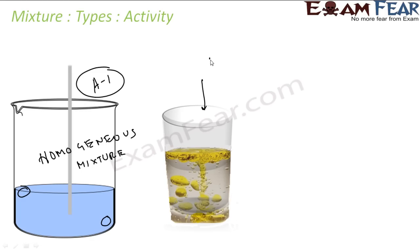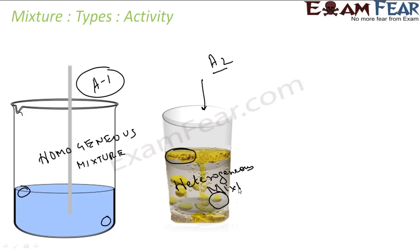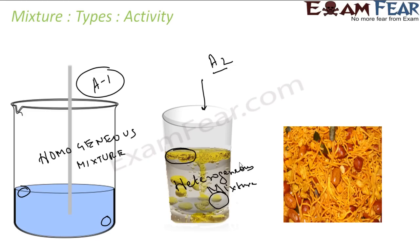Activity two: take some oil and mix a few drops into a glass of water. You will see that from one part and another the concentration of oil is different — it is not mixed uniformly, so it is a heterogeneous mixture. Activity three: mix bhujia, raisins, and almonds together — what you get is again a heterogeneous mixture.